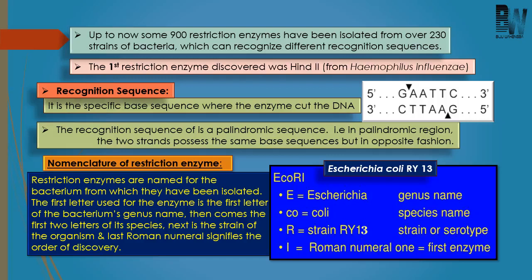To understand the nomenclature, let us take the example of EcoRI. EcoRI is an enzyme which has been isolated from Escherichia coli RY13. The first letter 'E' represents the first letter of the genus, that is Escherichia. The next two letters 'co' represent the first two letters of the species, that is coli. The letter 'R' represents the strain of the bacterium, that is RY13. The last Roman numeral indicates the order of identification or discovery of that enzyme in that particular organism.